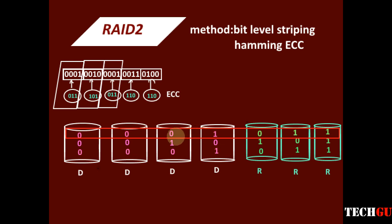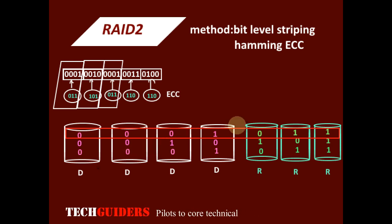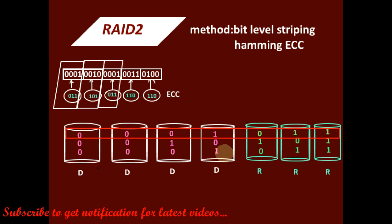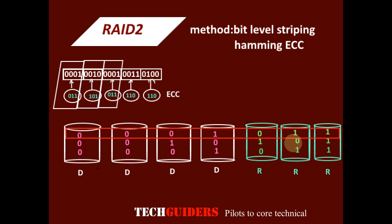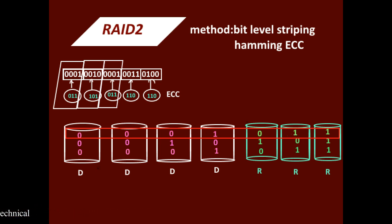Regarding usable disk capacity, compared to RAID 1 it is better. In RAID 1, for every data disk we need a redundant disk. In RAID 2, for 4 data disks we need only 3 redundant disks, and for 10 data disks we need only 4 redundant disks. Thus the usable disk capacity is greater compared to RAID 1.